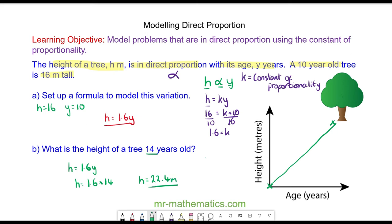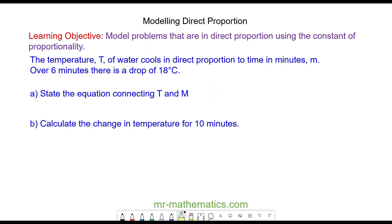Let's try another question. In this question, the temperature of water cools in direct proportion to the time in minutes. The temperature we're calling T and the number of minutes we're calling m. This is in direct proportion, so we use the symbol again. This tells you that the two units are in proportion. Now we need to use k to tell us how they are in proportion.